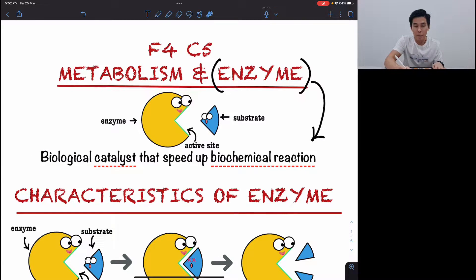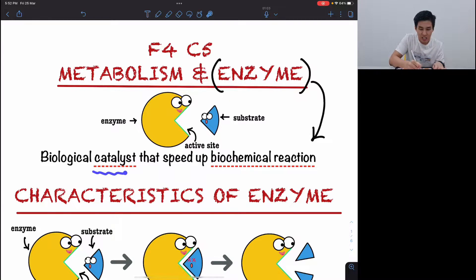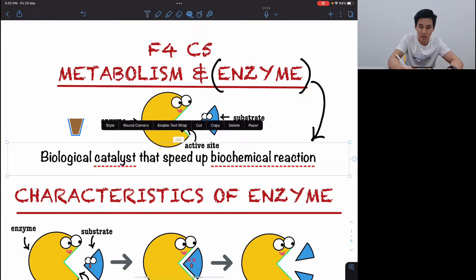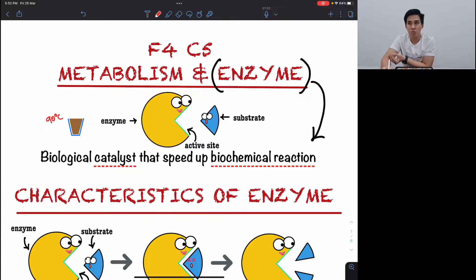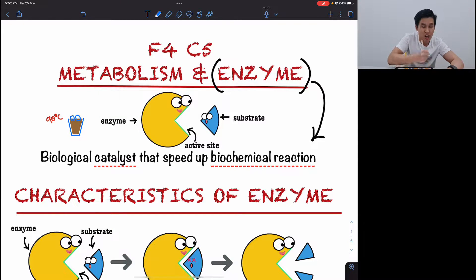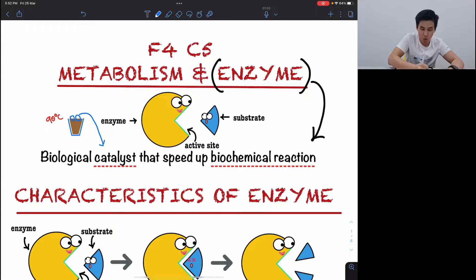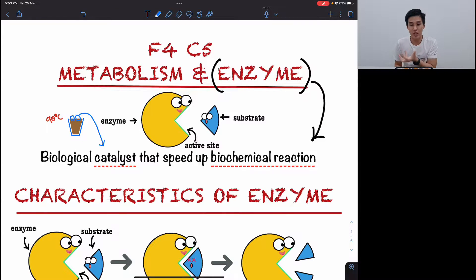Enzymes are biological catalysts that speed up biochemical reactions — digestion is an example of a biochemical reaction. A catalyst is a substance that speeds up a reaction. For instance, a boiling hot glass of Milo takes 10 to 20 minutes to cool down, but if you add ice, it cools in less than a minute. The ice is the catalyst that speeds up the cooling process — that's what enzymes are.